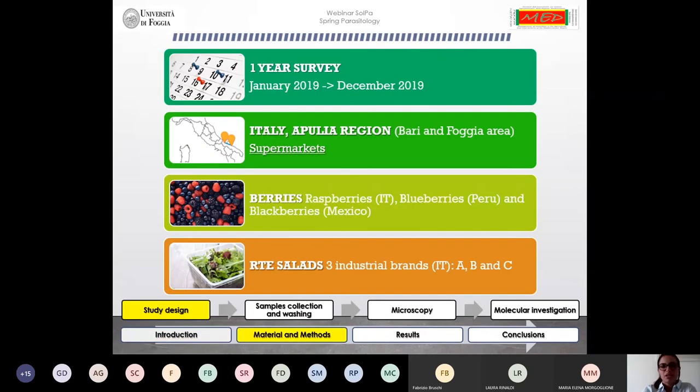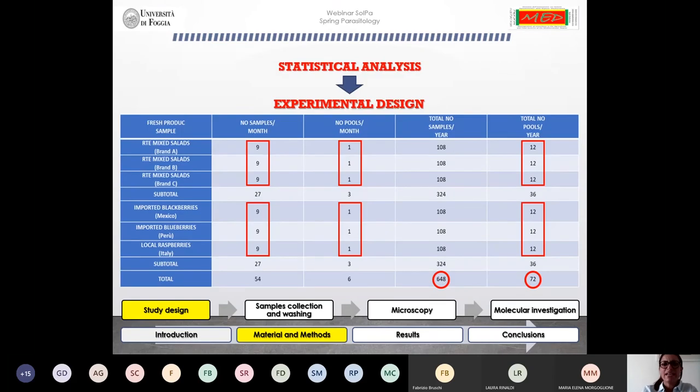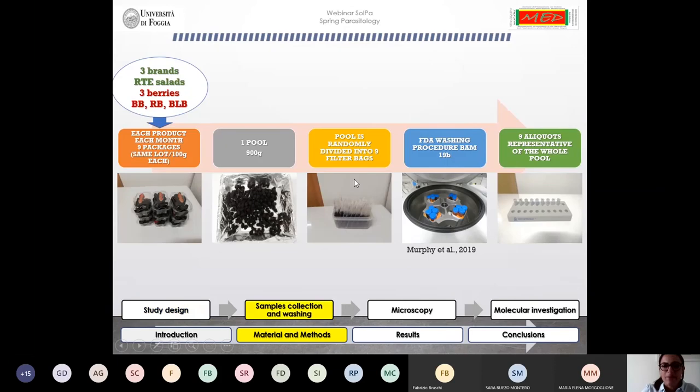We carried out a one-year survey from January 2019 to December 2019. We sampled berries, particularly raspberries from Italy, blueberries imported from Peru, and blackberries imported from Mexico, and also ready-to-eat salads belonging to three industrial brands. All these samples were purchased from supermarkets located in the Apulia region, in particular Bari and Foggia. After carrying out a statistical analysis, an experimental design was set up according to which 648 samples were collected, and from these we obtained 72 pools and tested them. Each month, per each product, we purchased nine packages.